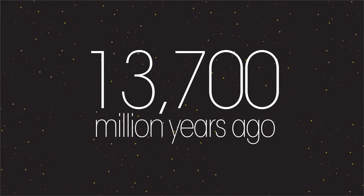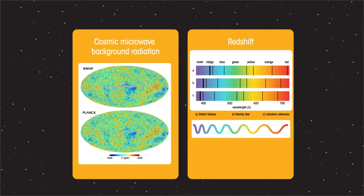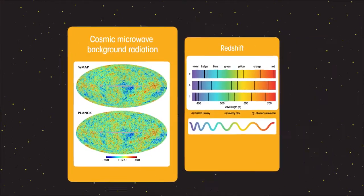There are two pieces of evidence for the Big Bang: cosmic microwave background radiation and redshift.